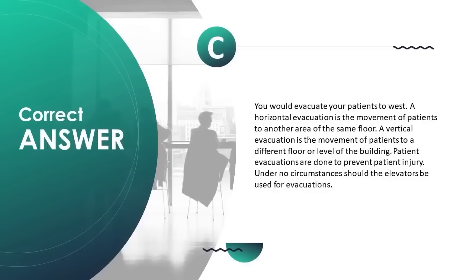A horizontal evacuation is the movement of patients to another area of the same floor. A vertical evacuation is the movement of patients to a different floor or level of the building. Patient evacuations are done to prevent patient injury. Under no circumstances should elevators be used for evacuations.